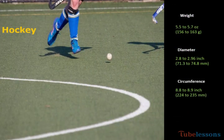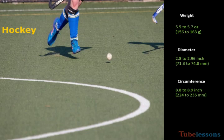Next one: hockey. Weight of the hockey ball should be between 5.5 and 5.7 ounce, or 156 and 163 grams. Diameter should be between 2.8 and 2.96 inch, or 71.75 and 75.22 millimeter. Circumference should be between 8.8 and 9.0 inch, or 224 and 235 millimeter.